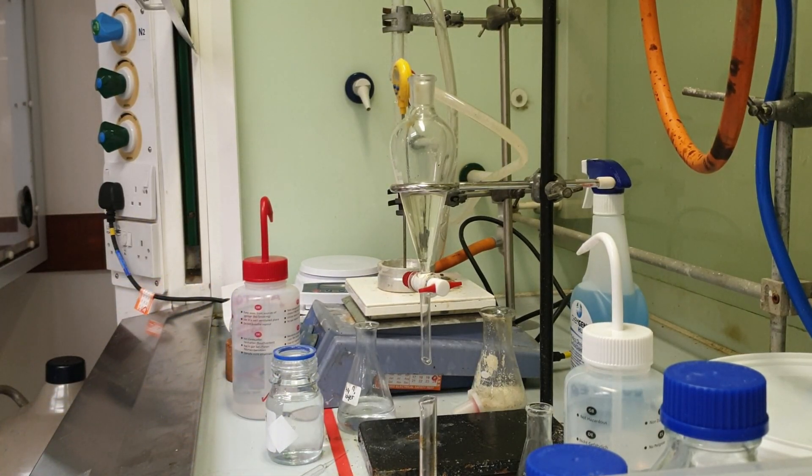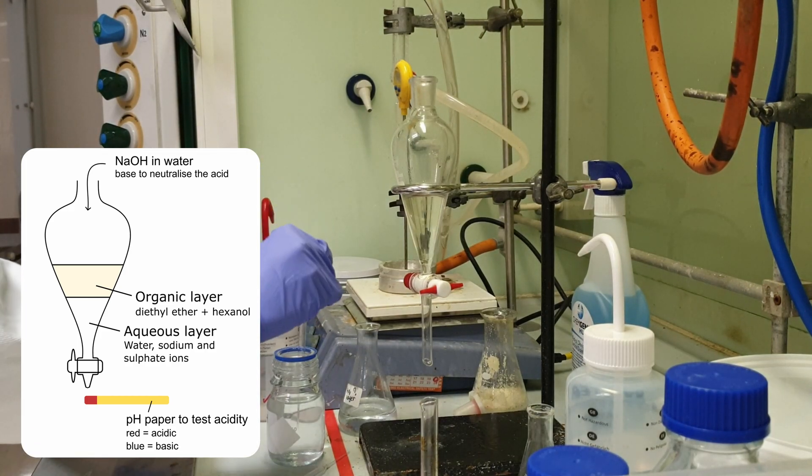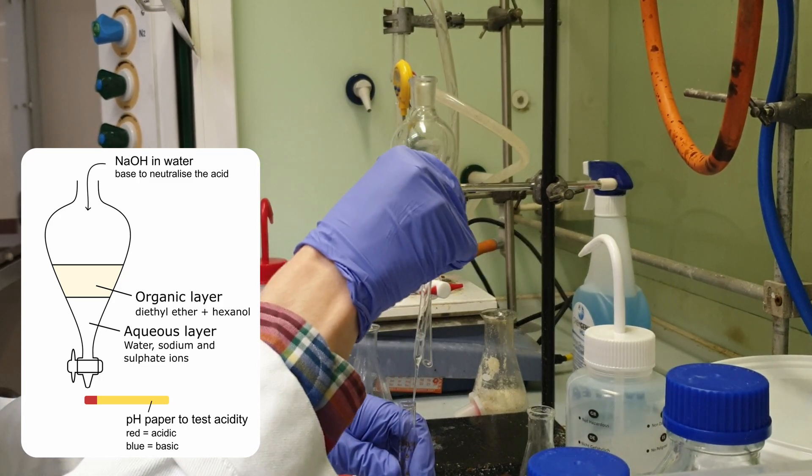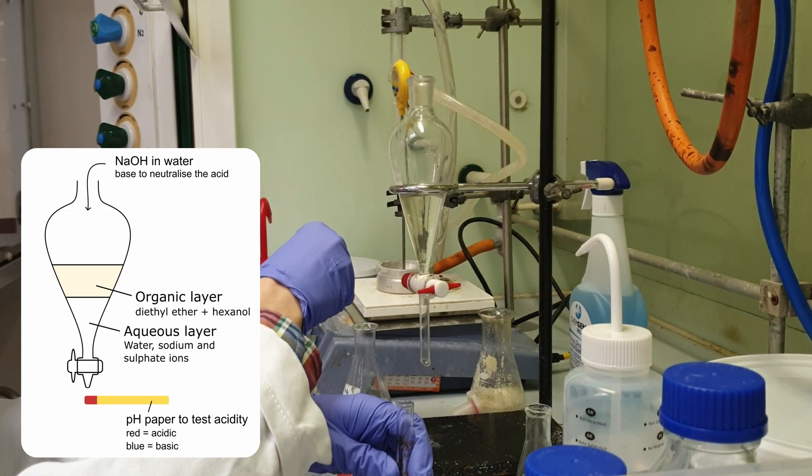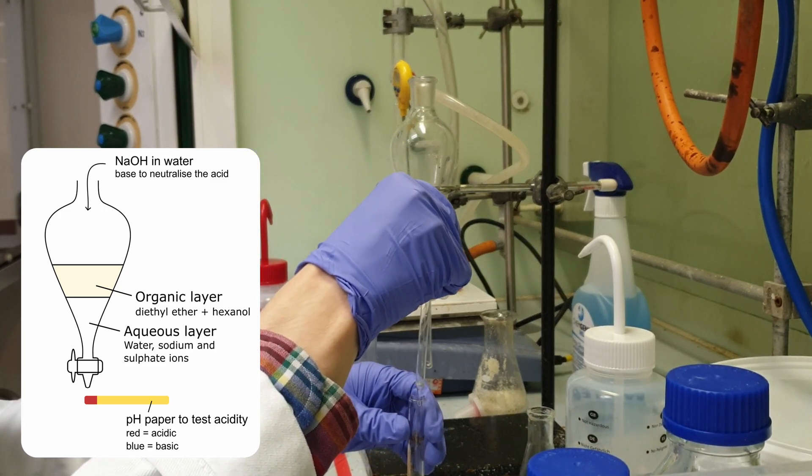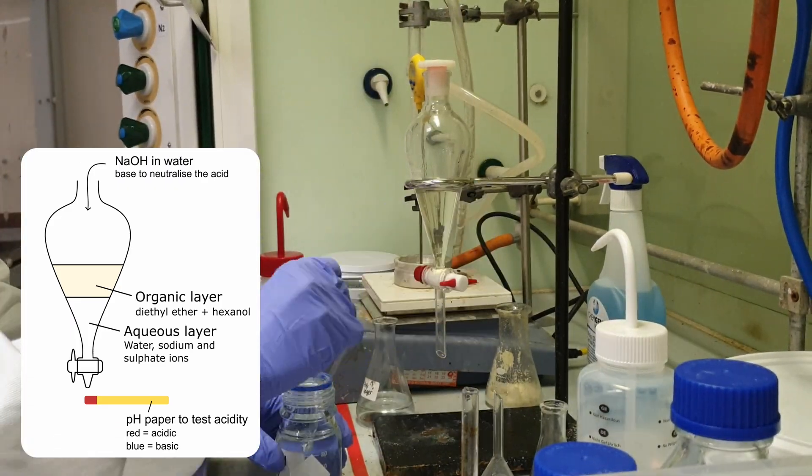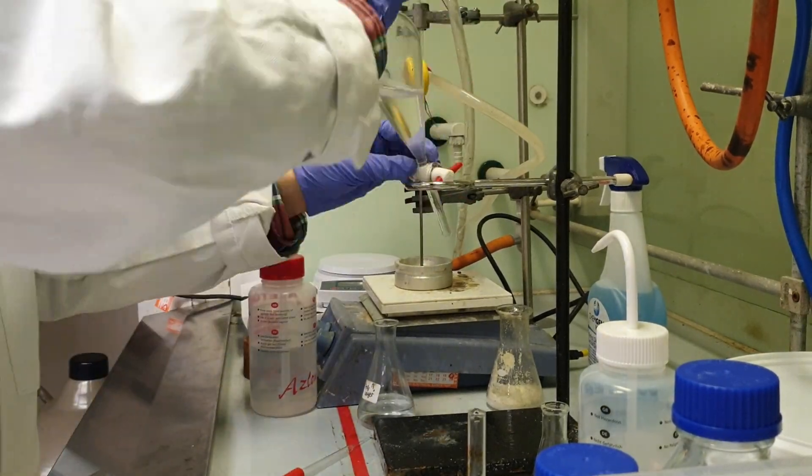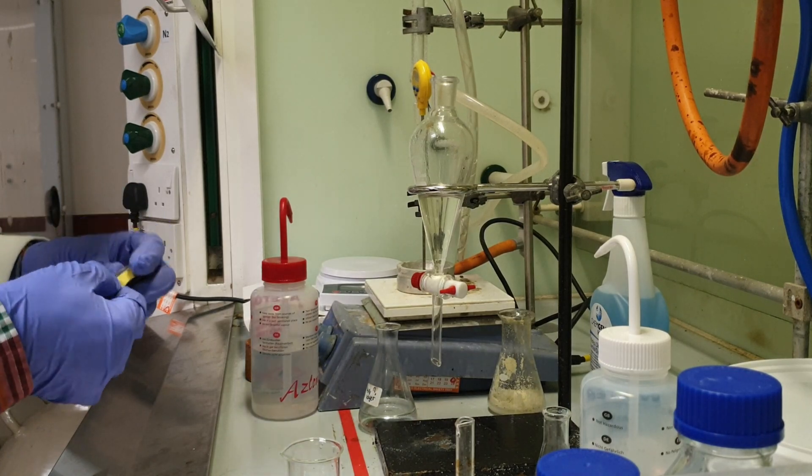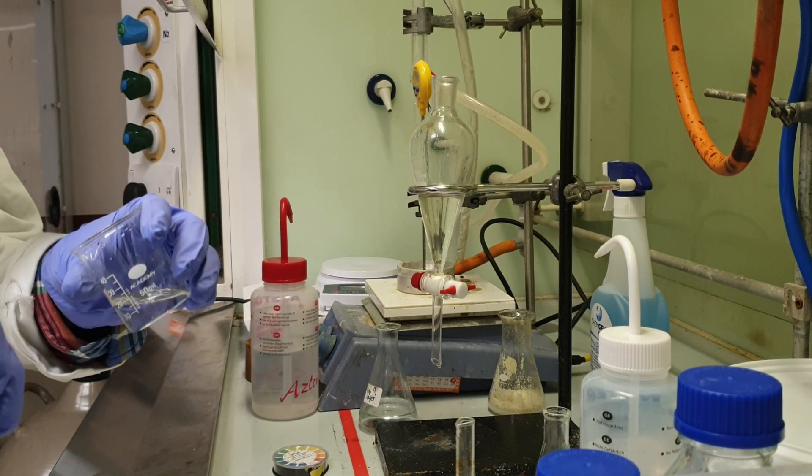Here I'm going to neutralize any remaining acid in my organic layer by adding sodium hydroxide. The ions sodium and sulfate will be dissolved into the water and removed into the aqueous waste layer. I'll be testing the pH of the aqueous layer using pH paper. That's acidic. I need to add water.